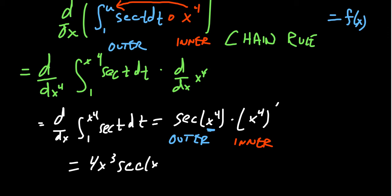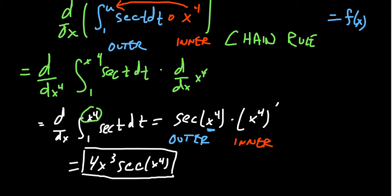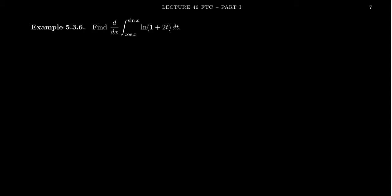The final answer is 4x³ times secant of x to the fourth — that's the derivative of x to the fourth times secant of x to the fourth. So if the upper limit is not just x but a more complex function, you take the integrand, plug the upper limit in for t, and then multiply by the derivative of that upper limit. Let's look at another example that's a little more complicated.